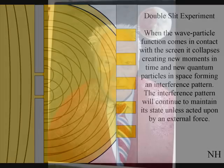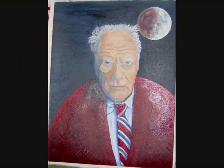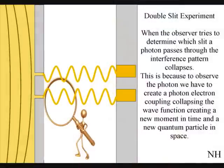When the observer turns on a detector to determine which slit a photon passes through, the interference pattern collapses. At that moment in time, the interference pattern disappears.